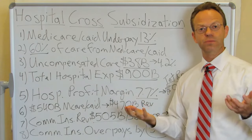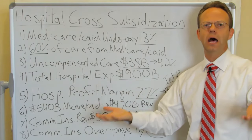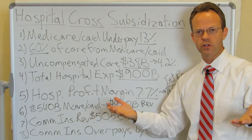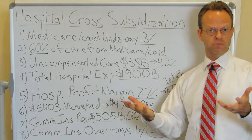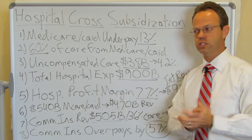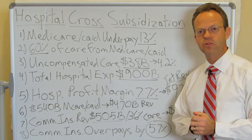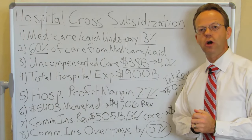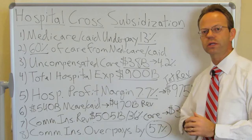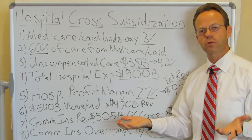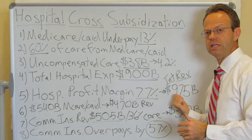Hospitals still make money — they still have a profit margin. Even non-profit hospitals still have a profit margin. That was reported by the American Hospital Association as well: 7.7%. Knowing their expense and knowing their profit margin, you can solve for total hospital revenue, which was $975 billion.